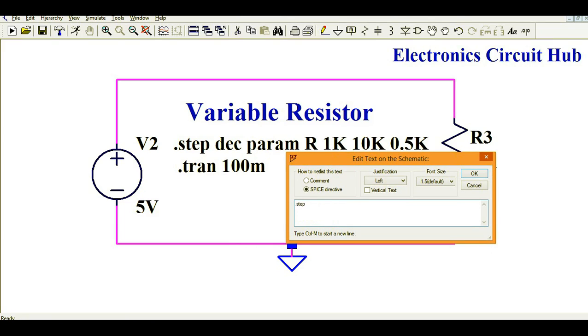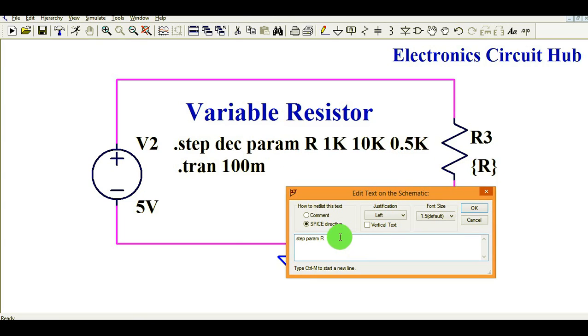Then, let's say, param, then let's say you are sweeping the resistance of R here. This is R value, and your initial value is, let's say, 1K.